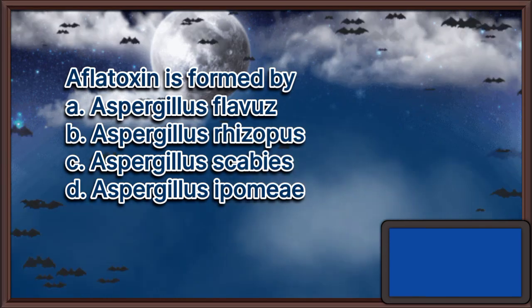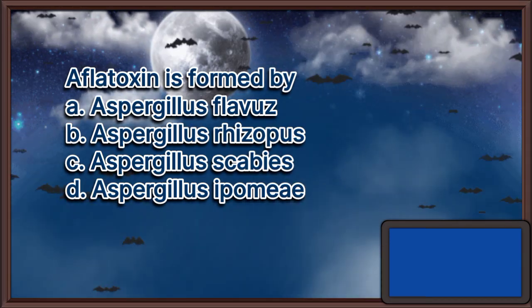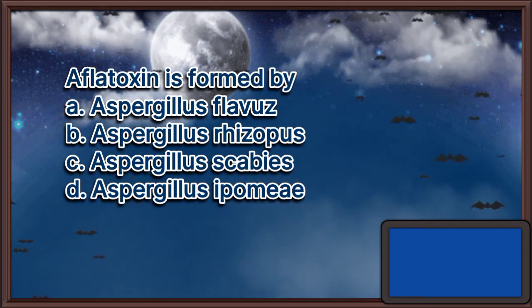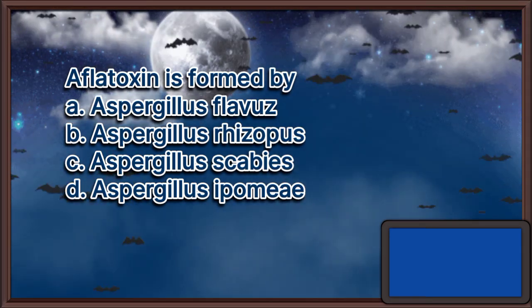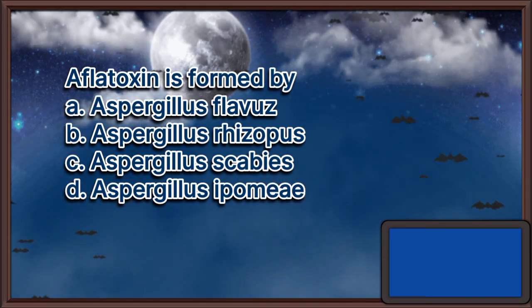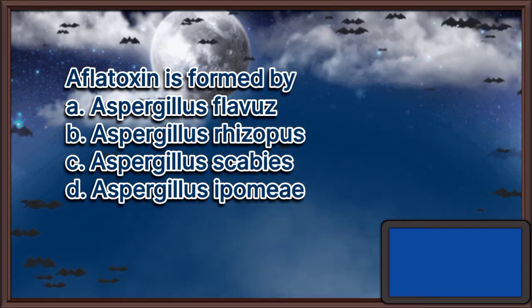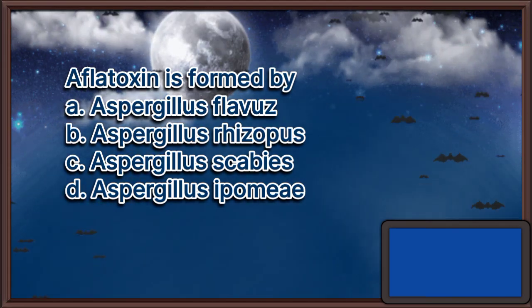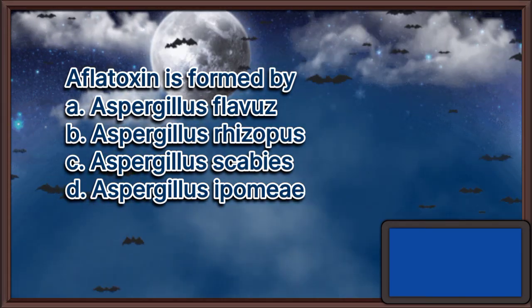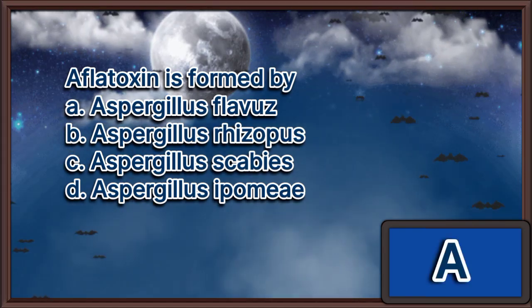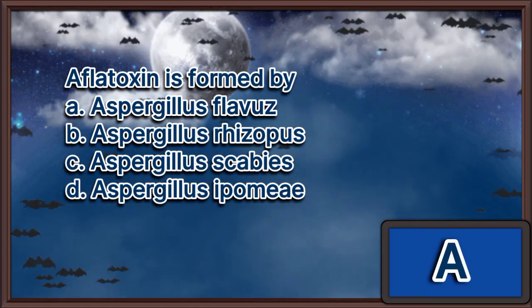Aflatoxin is formed by: A. Aspergillus flavus, B. Aspergillus rhizopus, C. Aspergillus scabies, D. Aspergillus ipomei. The answer is letter A.